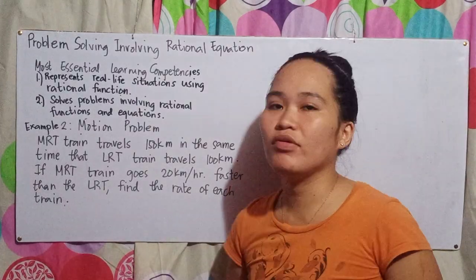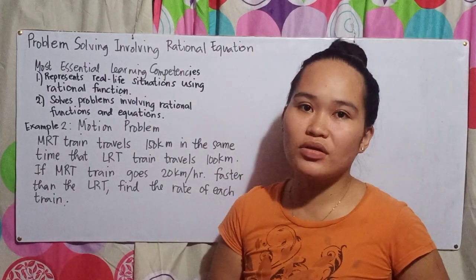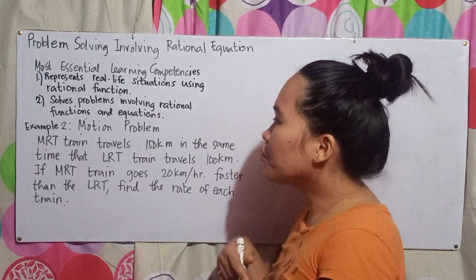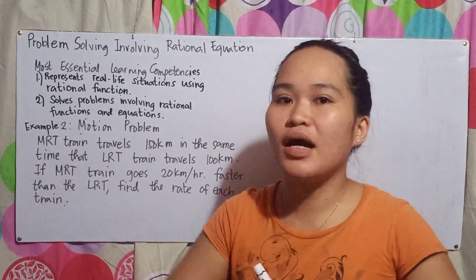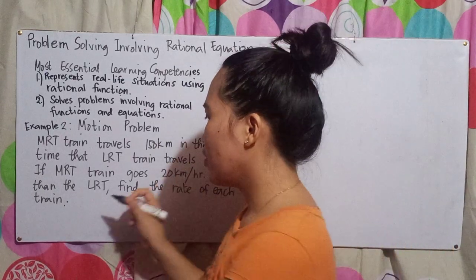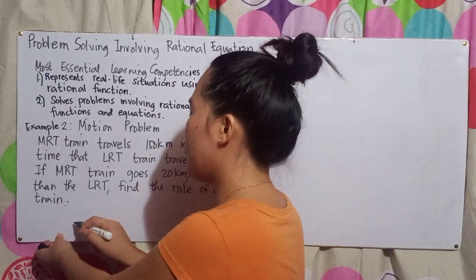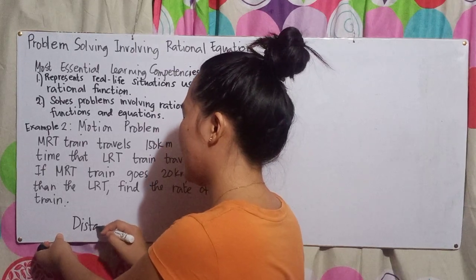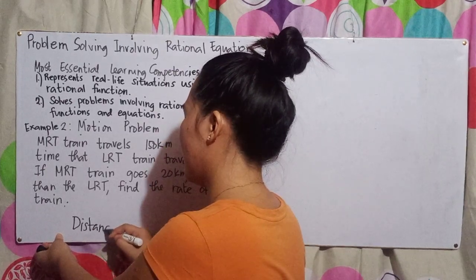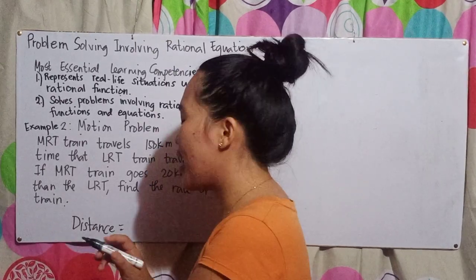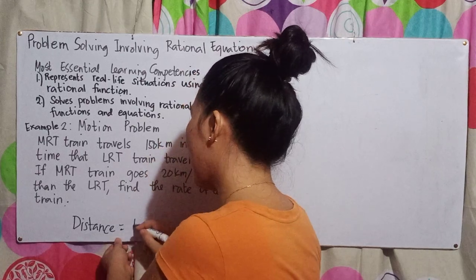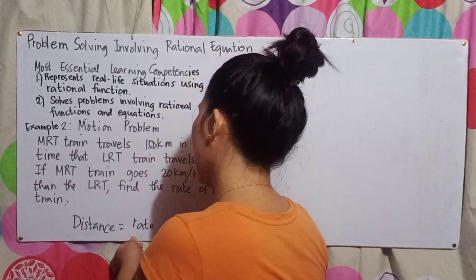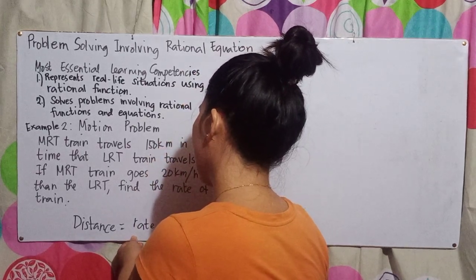Find the rate of each train. Take note — for a motion problem, we use the formula: distance equals rate times time.